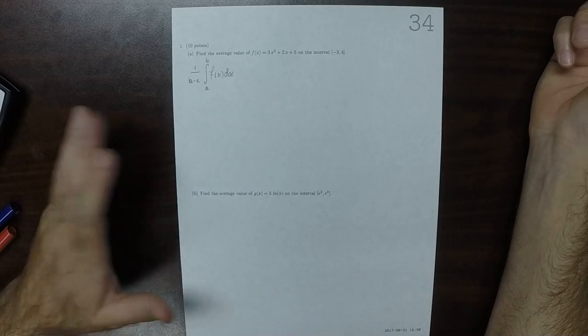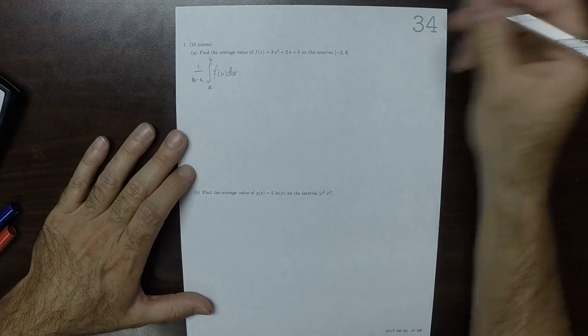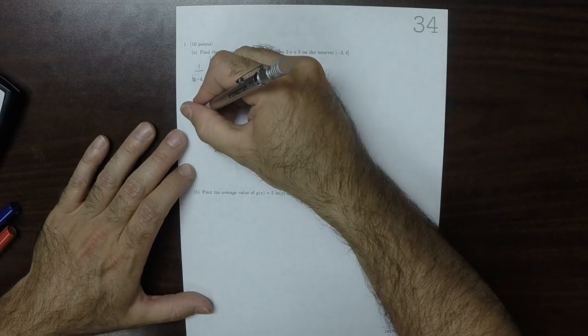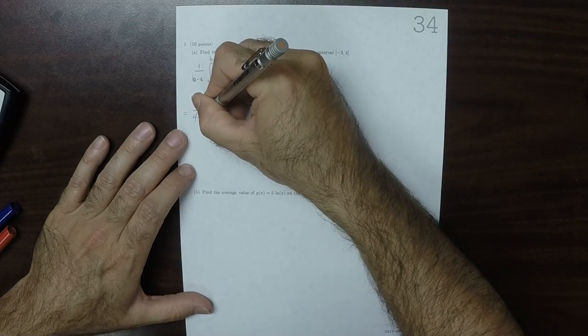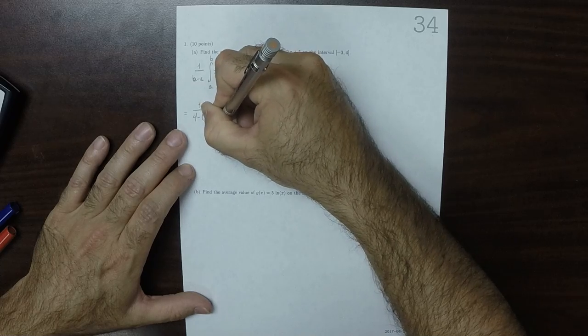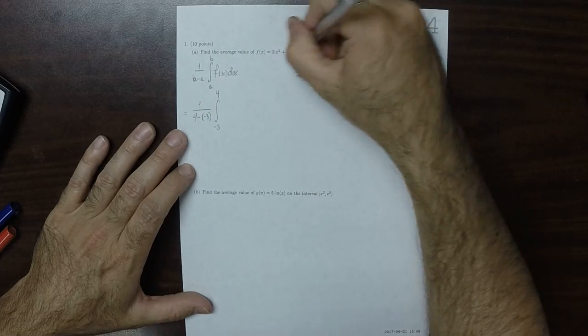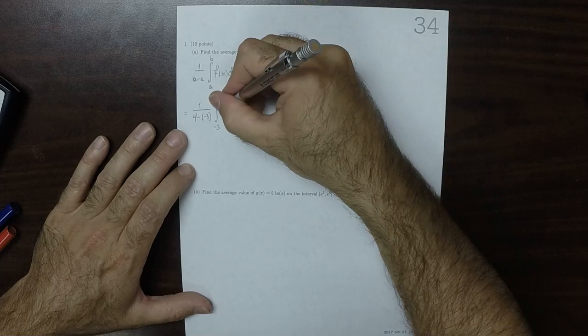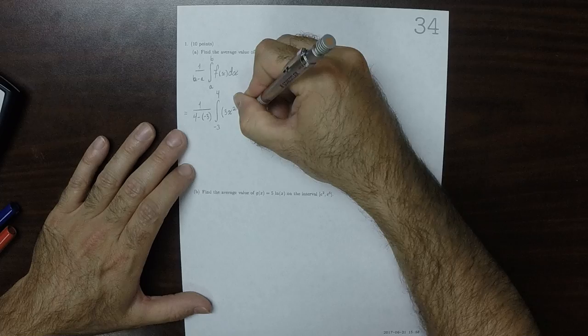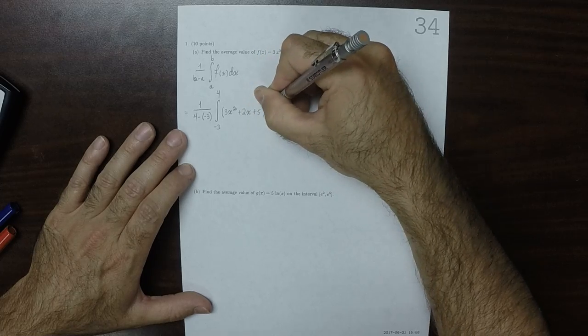So now we just have to plug things in. So this would be 1 over 4 minus negative 3, the integral from negative 3 to 4 of that function, 3x squared plus 2x plus 5 dx.